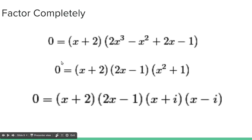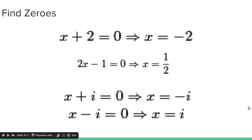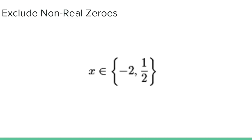And then we can factor out the x squared plus 1 into x plus i and x minus i. So now we have all four factors of the quartic polynomial. And then we find the zeros. We get negative 2, 1 half, negative i, and i. In the original problem, it said that it wanted the real answers. So we get negative 2 and 1 half as our answer.